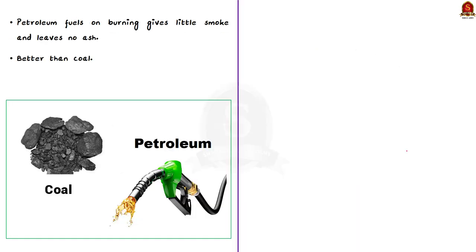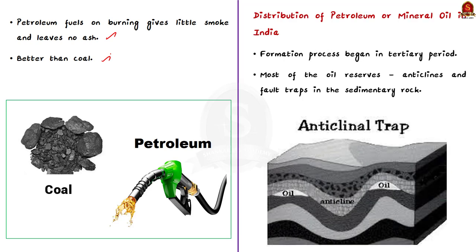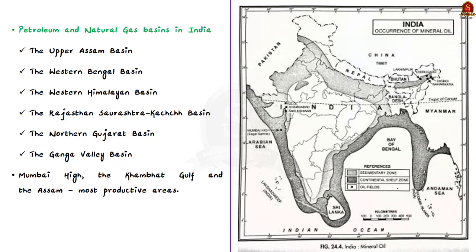Note that petroleum fuels on burning give little smoke and leave no ash, so they are a better fuel than coal. Most oil reserves in India are associated with anticlines and fault traps in sedimentary rocks. The petroleum and natural gas basins in India include the Upper Assam Basin, West Bengal Basin, Western Himalayan Basin, Rajasthan, Saurashtra and Kutch Basin, the Northern Gujarat Basin, and the Ganga Valley Basin. Note that Mumbai High, the Cambay Gulf, and Assam are the most productive areas for petroleum or mineral oil.